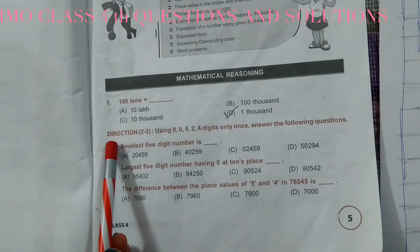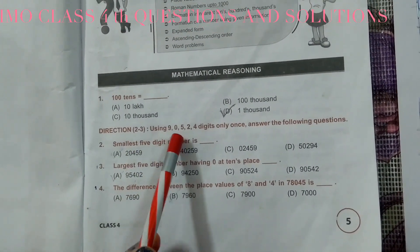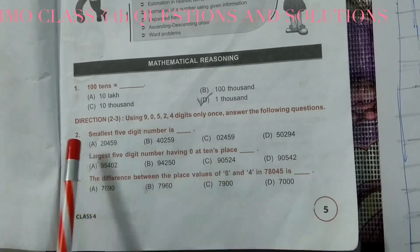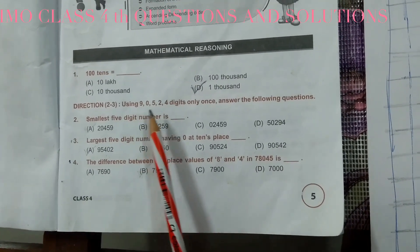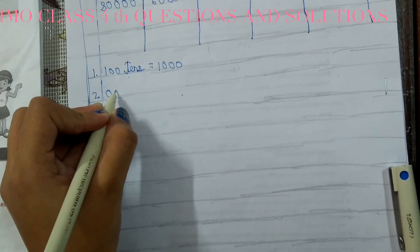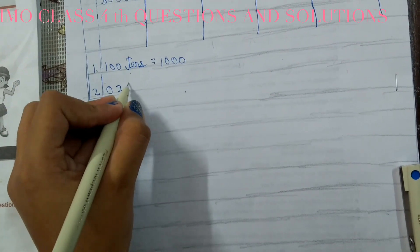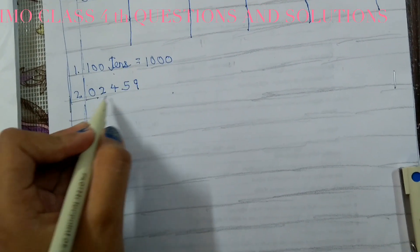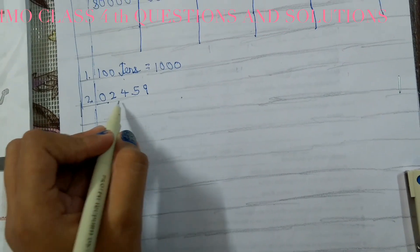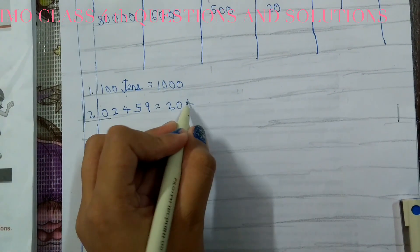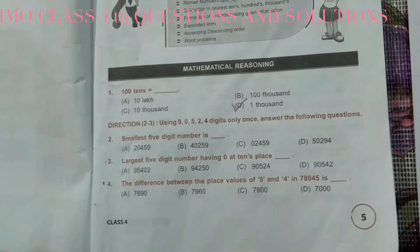The direction for the second and third questions: using the digits 9, 0, 5, 2, 4 only once, answer the following. The second question: smallest five-digit number. First we write these numbers in ascending order: 0, 2, 4, 5, and 9. Because zero has no value, placing it first gives only a four-digit number, so we place zero after 2. The answer is 20459, which is A.